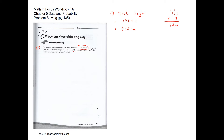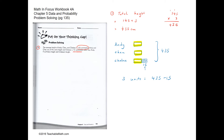Now we do bar modeling. Andy and Chen have the same height, and Chelsea is 15 centimeters taller. So we represent Chelsea's bar as one unit plus 15 centimeters. Together, all three total 435 centimeters. Writing our equations: we have one unit for Andy, one unit for Chen, and one unit for Chelsea, giving three units total.